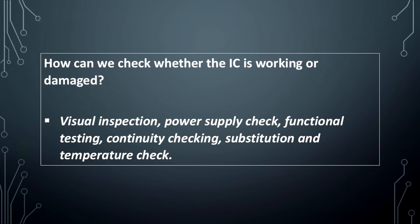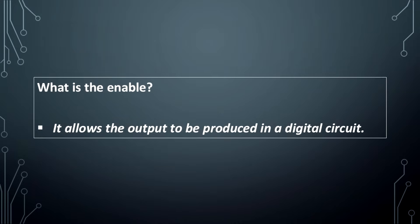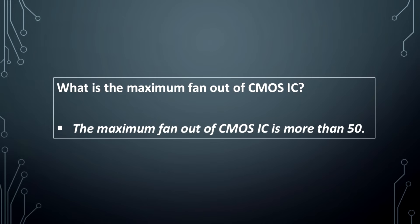How can we check whether an IC is working or damaged? The maximum fan-out of a CMOS IC is more than 50.